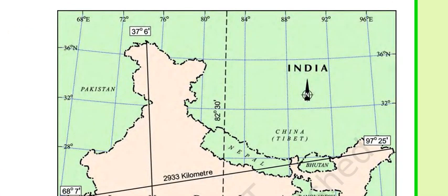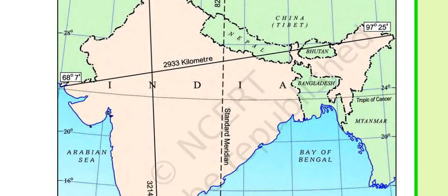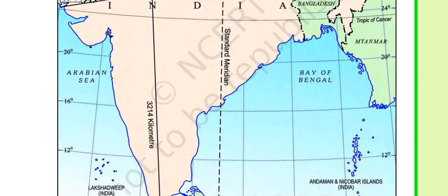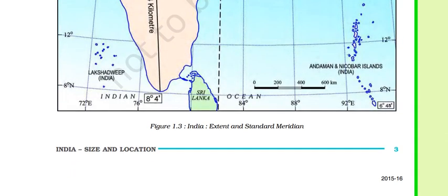We have already studied that 37 degrees is the northern latitude, 67 degrees 7 minutes and 97 degrees 25 minutes span west to east. From west to east our portion is 2,933 kilometers, and north to south is 3,214 kilometers. This is the Bay of Bengal with the Andaman and Nicobar Islands, and in the Arabian Sea is the Lakshadweep Island.